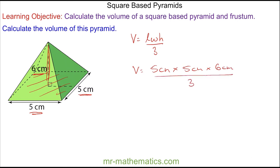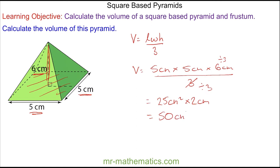Before calculating the numerator, we can simplify this fraction by dividing both the numerator and denominator by three. So we have five times five, which is 25 centimeters squared, and six centimeters divided by three is two. So the volume of this square base pyramid is 50 centimeters cubed.